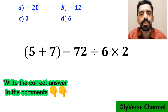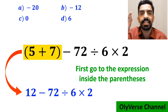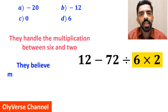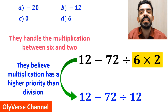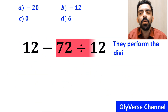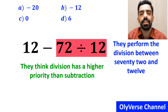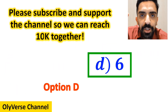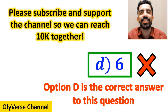Also, some other people, when solving this question, first go to the expression inside the parenthesis and rewrite this expression as 12 minus 72 divided by 6 times 2. In the next step, they first handle the multiplication between 6 and 2, because they believe multiplication has a higher priority than division. So they rewrite this expression as 12 minus 72 divided by 12. In the final step, they perform the division between 72 and 12, because they think division has a higher priority than subtraction. So they simplify this expression to 12 minus 6, which ultimately gives them the answer 6. And immediately, they conclude that option D is the correct answer. But this is not the correct answer either — we were tricked.